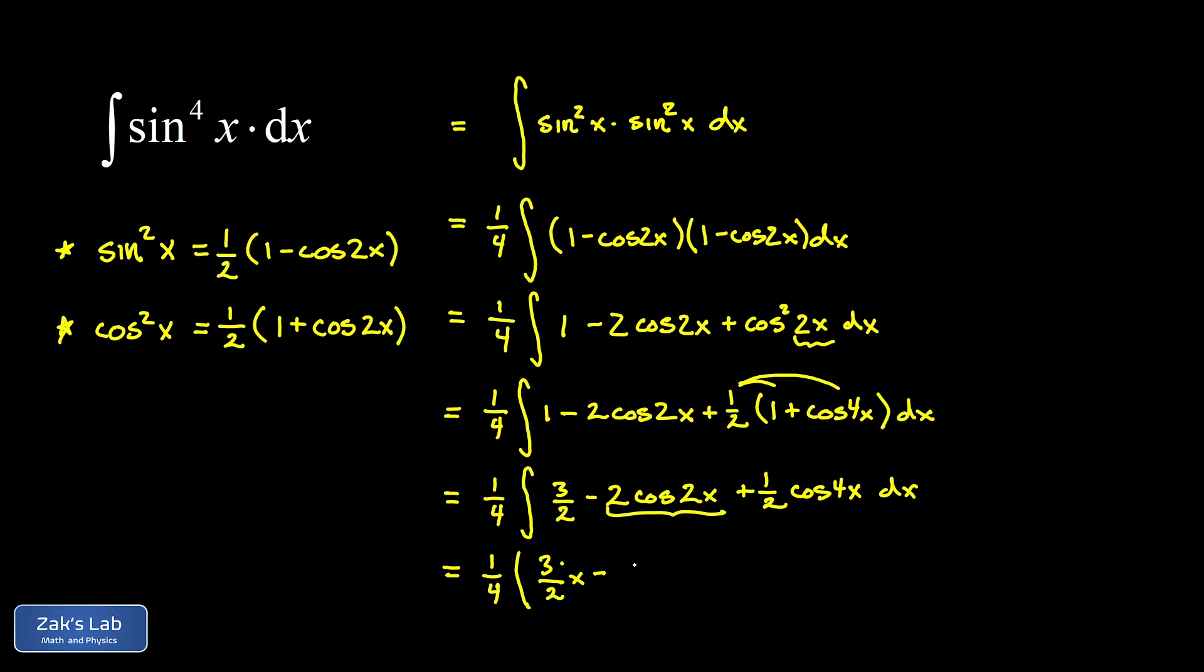The second term here is simply the derivative of sine 2x, so our anti-derivative is sine 2x there. If you're not seeing this, just take the derivative of sine 2x. You have to use the chain rule on that and you get cosine 2x multiplied by the derivative of 2x which is 2.